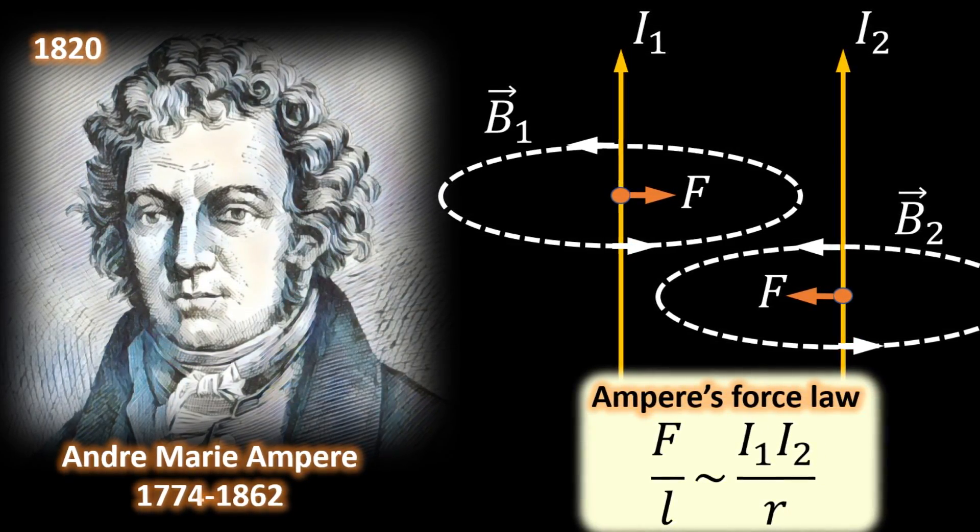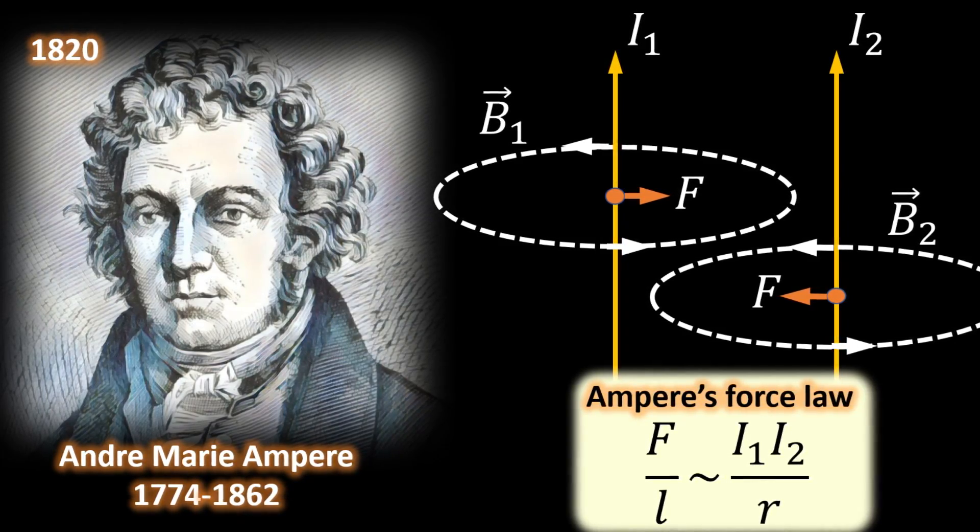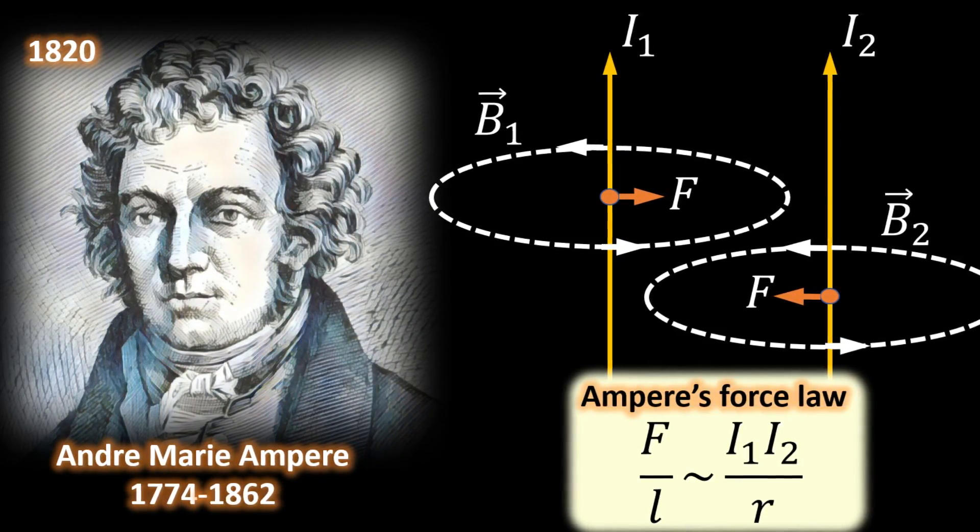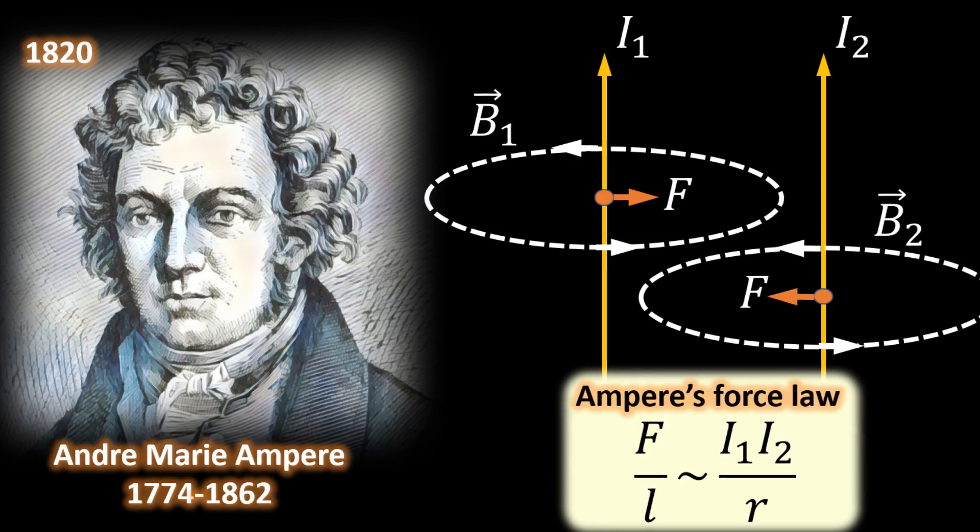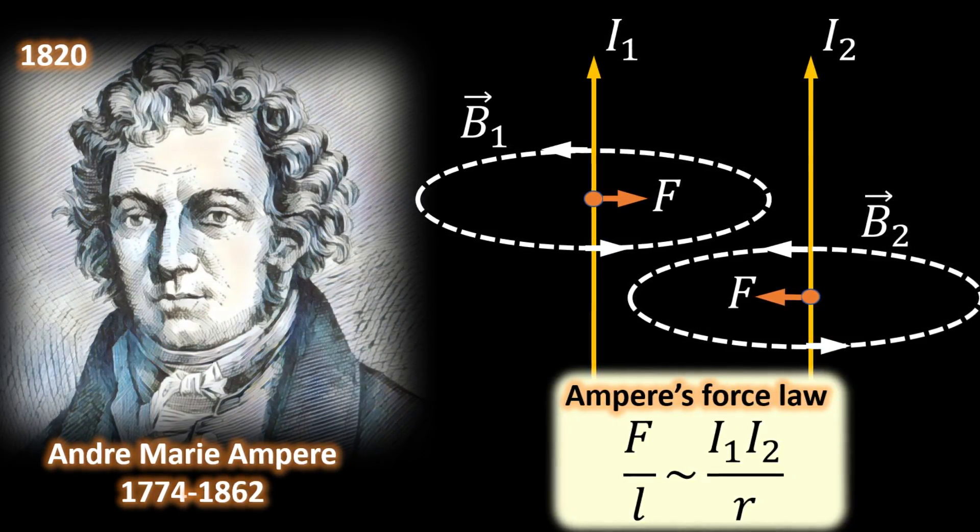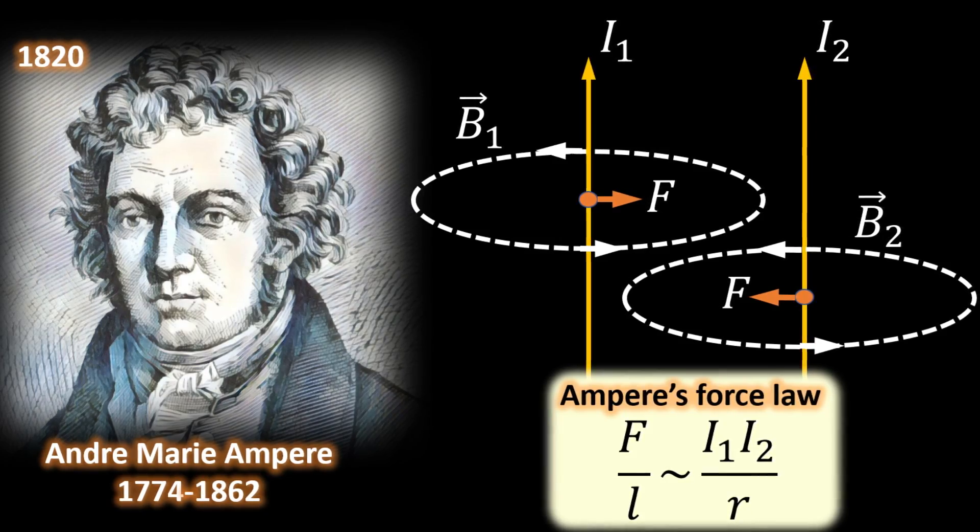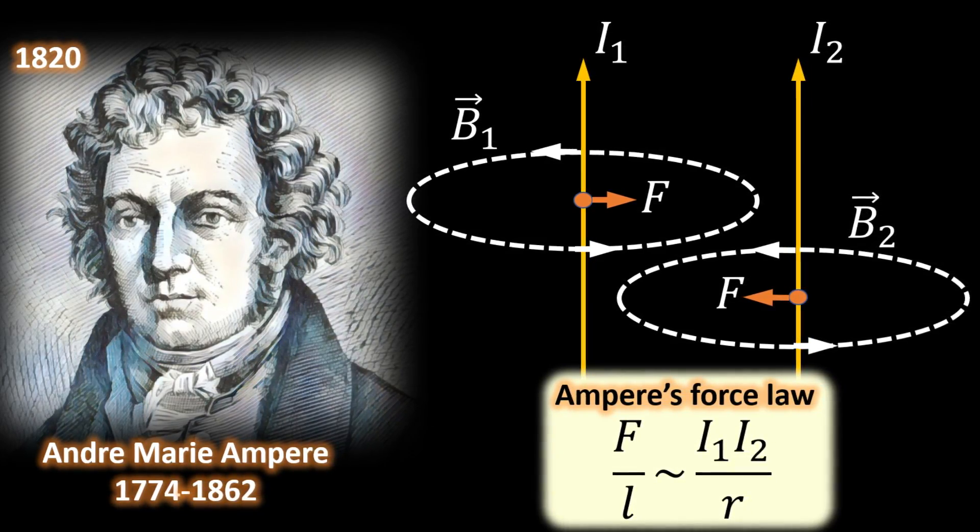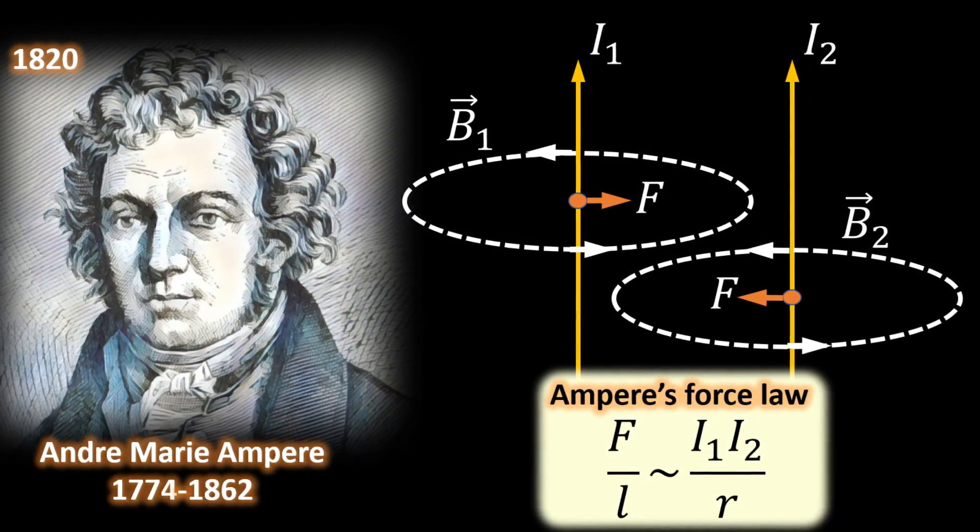Backed with careful experiments, Ampère proved that the force per unit length is proportional to the magnitude of the product of the two currents and inversely proportional to their distance r. But why was the dependence not r squared, like in gravitation and electrical charges? A mystery that Ampère sought to unravel.